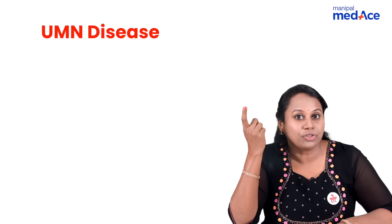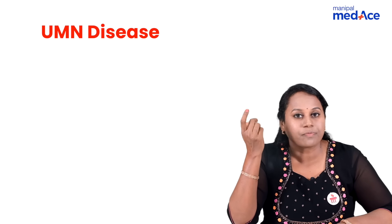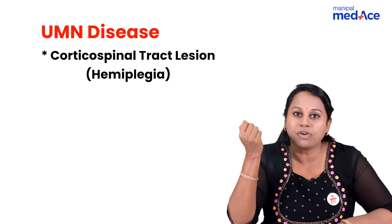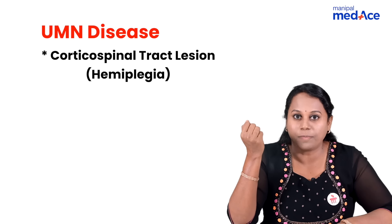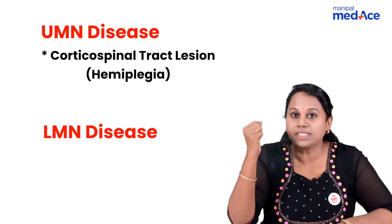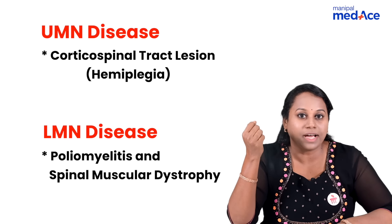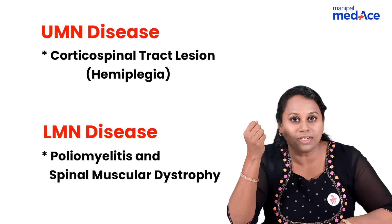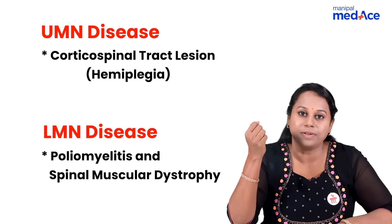What are the examples for UMN and LMN disease? Upper motor neuron disease: corticospinal tract lesion or hemiplegia. Lower motor neuron disease: poliomyelitis or spinal muscular dystrophy.